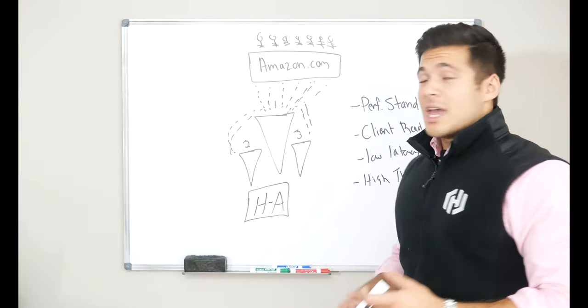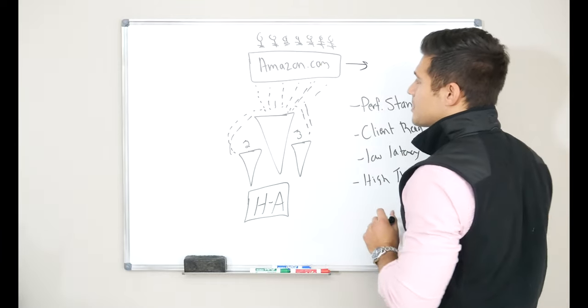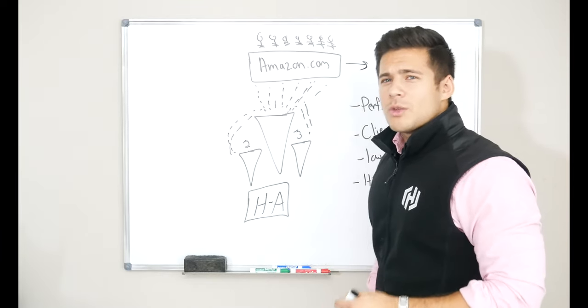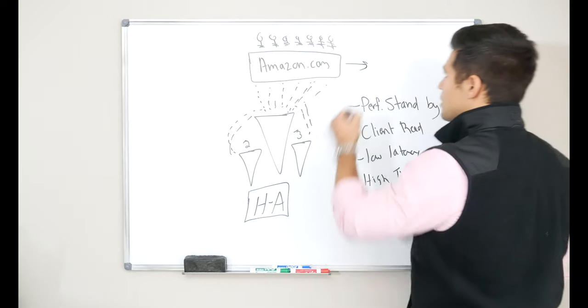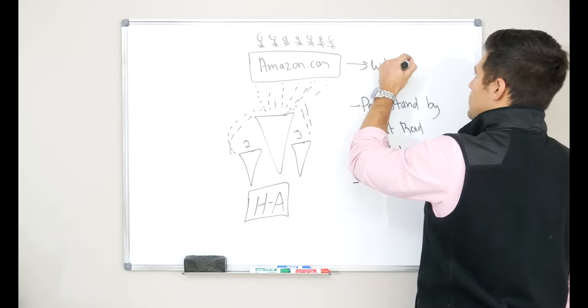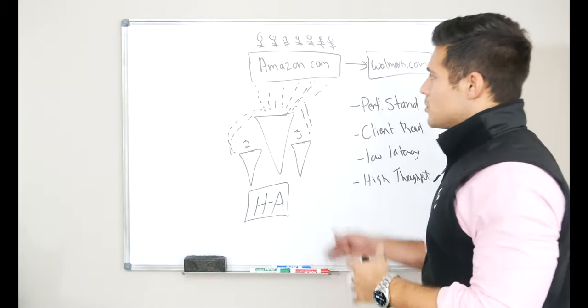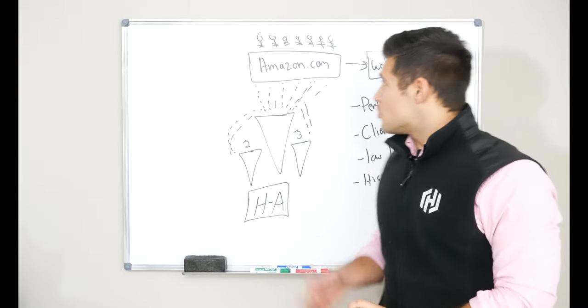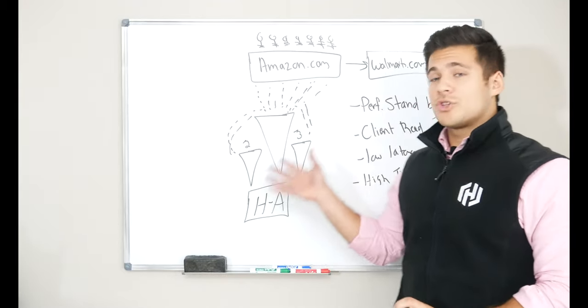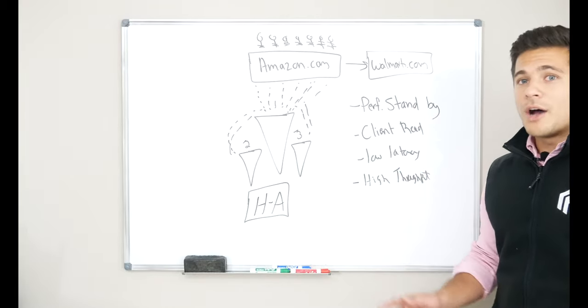In this example, it might be Amazon's competitor. So imagine you're a client from amazon.com and you're trying to log in, the web page is taking too long, and you say, you know what, I'm gonna go to walmart.com because their web page is probably working correctly and I'm gonna order my goods from walmart.com. You have now lost business to walmart.com because your solution could not support a low latency, high throughput model for your customers.